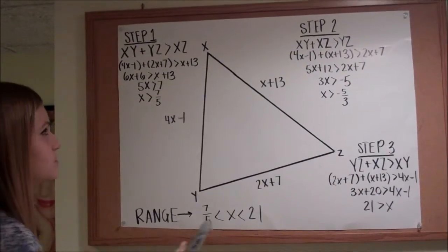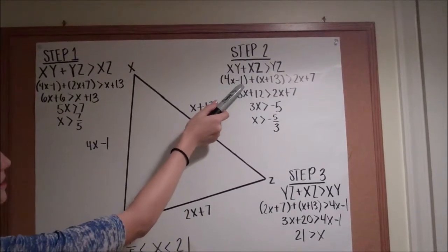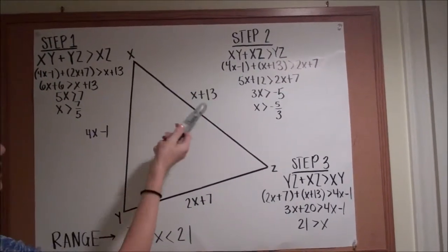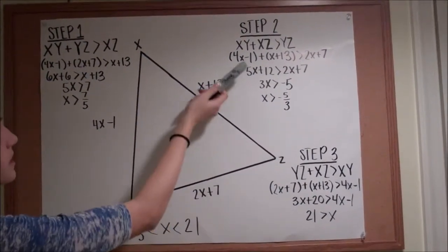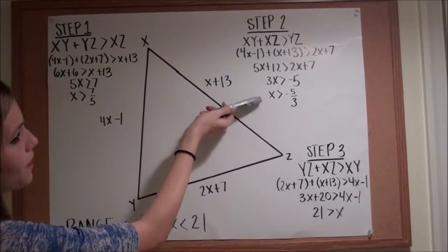For your second step, you do the same thing but with different sides. When you plug in all of your equations, then you get X is greater than negative 5 thirds.